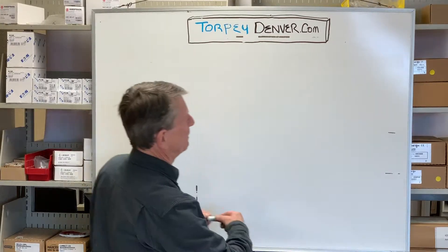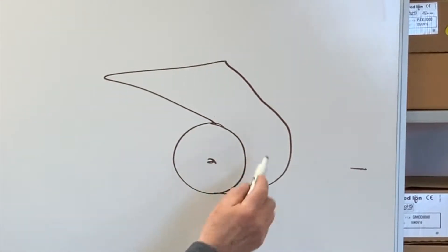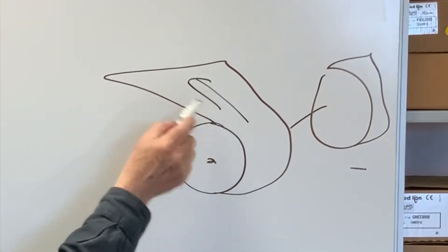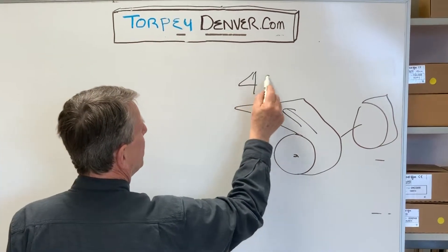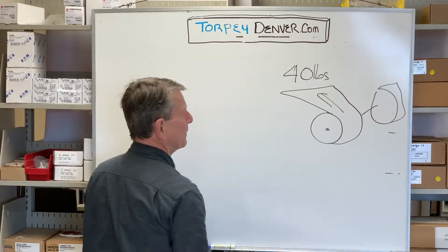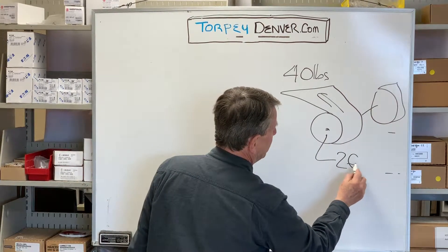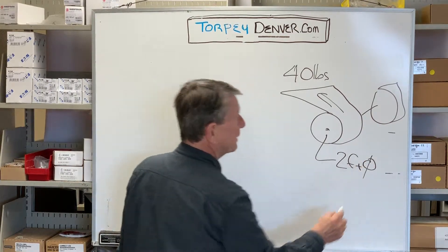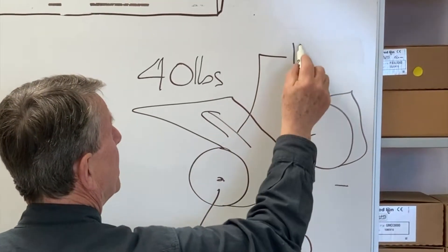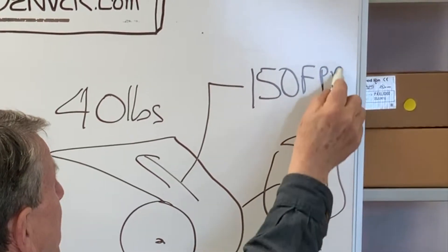Let's take the example of an unwind application. You're unwinding material off a roll and you have a tension brake. For our example, we're going to say you need 40 pounds of total tension across the web. The roll itself is two feet in diameter and that web is running at 150 feet per minute.